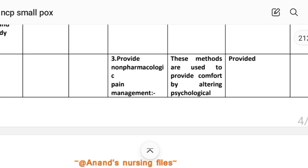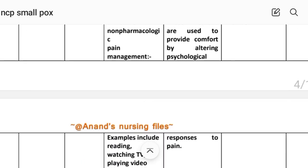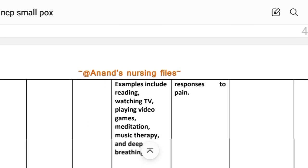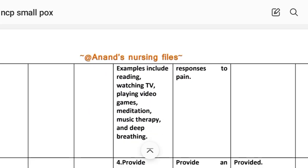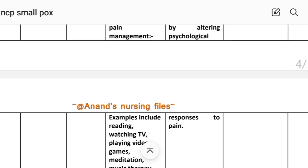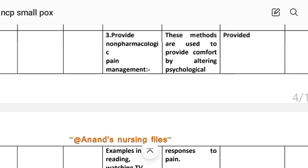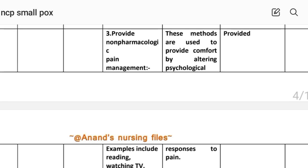Intervention number three: provide non-pharmacologic pain management. Examples include reading, watching TV, playing video games, meditation, music therapy and deep breathing. Rational: these methods are used to provide comfort while altering psychological responses to pain. Implementation: non-pharmacologic pain management provided.